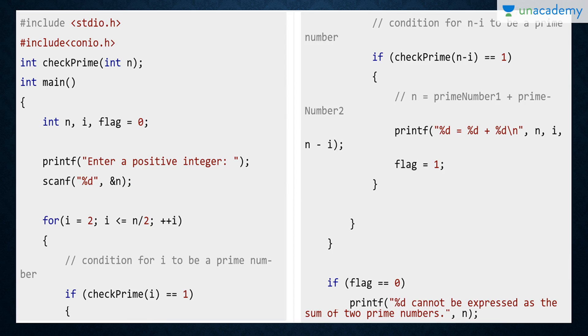Next program: whether a number could be expressed as sum of two prime numbers or not. Same approach - we have header files included, check prime is our function. In main, n is limit, i is loop variable, and flag is 0. Flag, as we have seen, is move and stop. 0 means stop, 1 means move. You can use any other variable instead of this. Then we enter a positive integer.